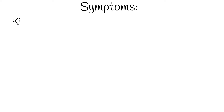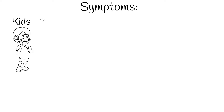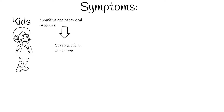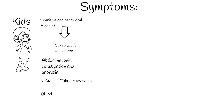Symptoms. Children with lead poisoning have cognitive and behavioral problems. If not treated in time, they may develop mental retardation, cerebral edema, and sometimes coma. Lead poisoning also causes abdominal pain, constipation, and anorexia.